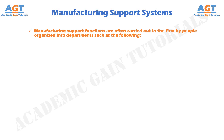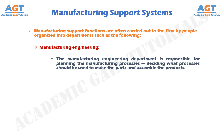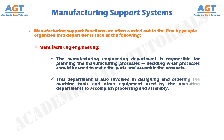Manufacturing support functions are often carried out by people organized into departments such as the following. Manufacturing engineering: the manufacturing engineering department is responsible for planning the manufacturing processes, which includes deciding what processes should be used to make the parts and assemble the products. This department is also involved in designing and ordering the machine tools and other equipment used by the operating departments to accomplish processing and assembly.